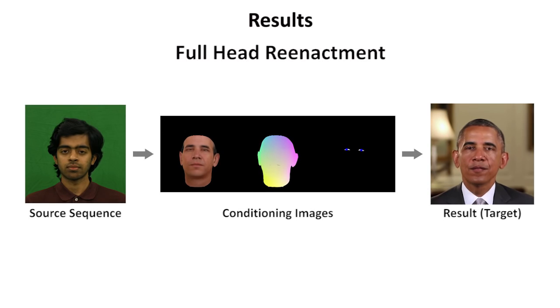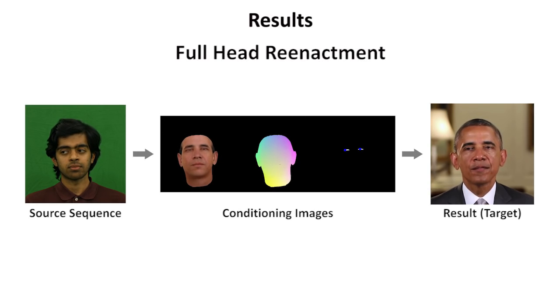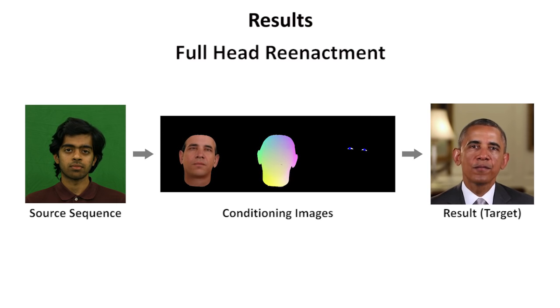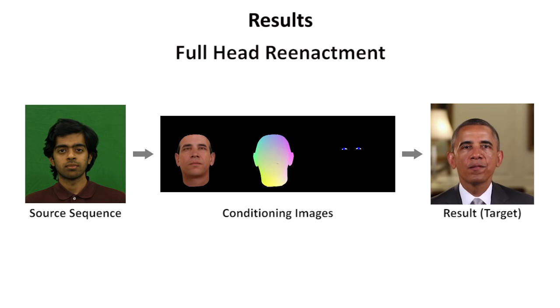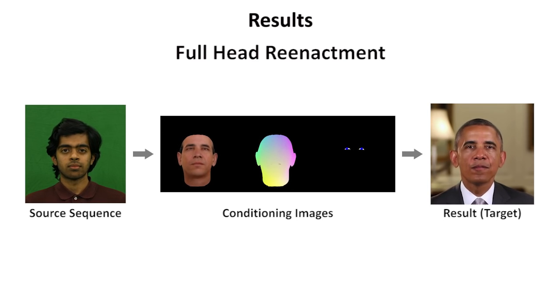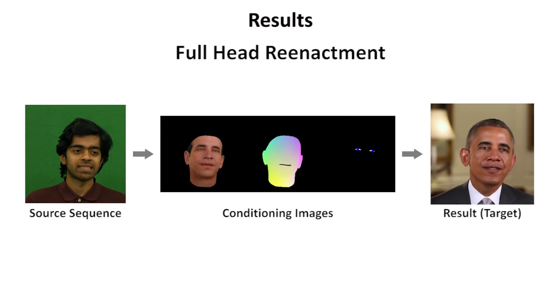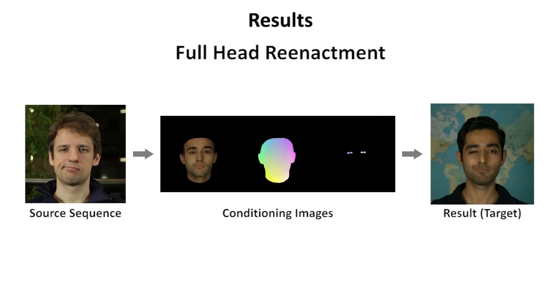We now show more full head reenactment results. Note that our approach only requires a few minutes of training data for the target actor and thus can even be applied to internet video footage. The reenacted output videos have a high level of realism. In addition to the head pose, the source actor can also control the facial expressions and the eye motion, including eye blinks.